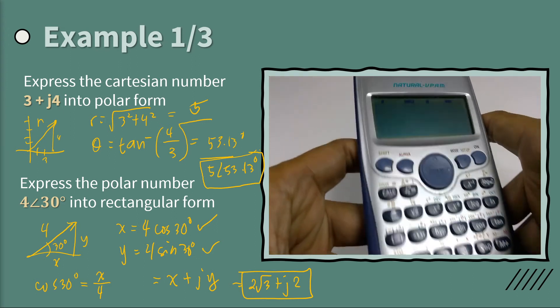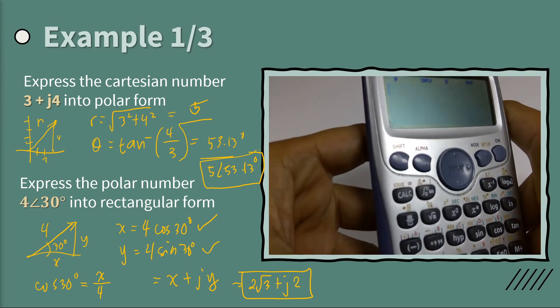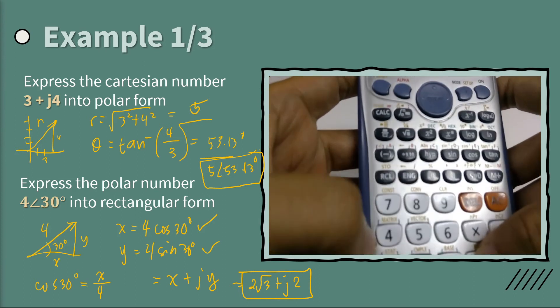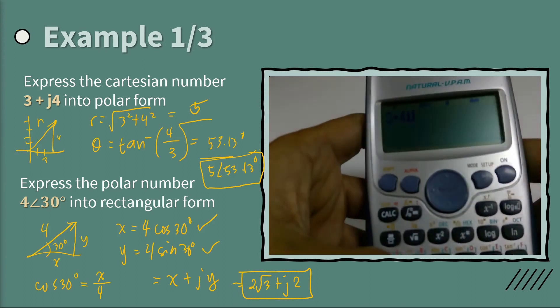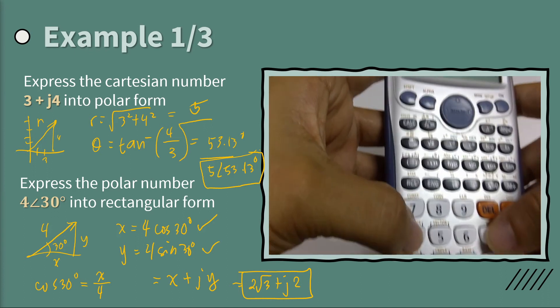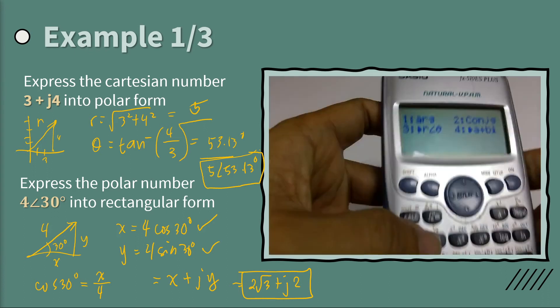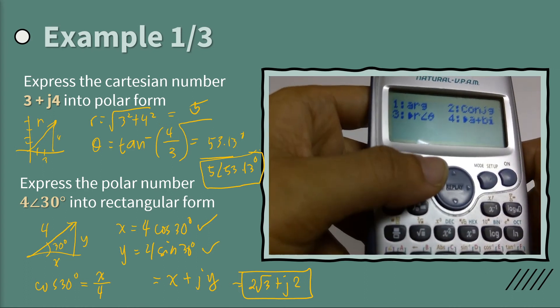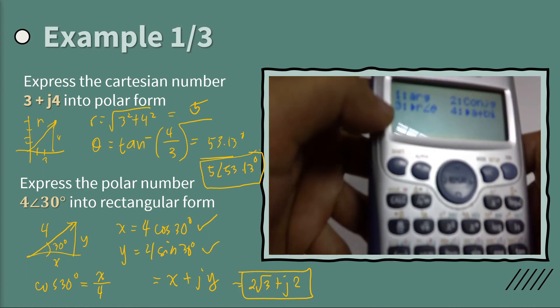So you can store it as a variable, but in this case we don't need to do that. So you can just simply write 3 plus 4i. And then you can shift complex, shift 2. Then you will see some options there. So we press number 3.